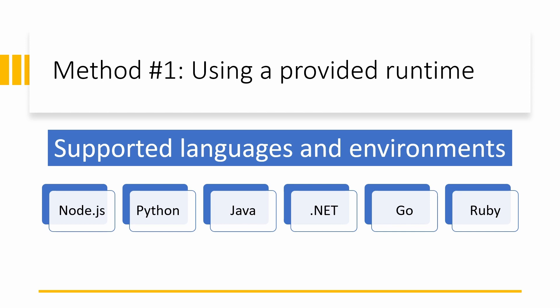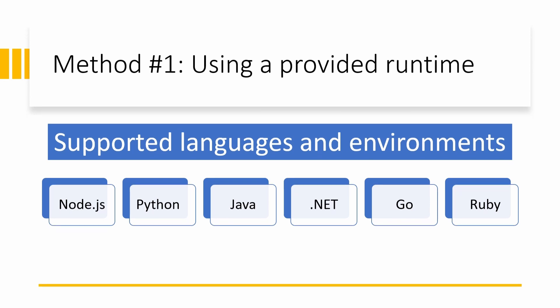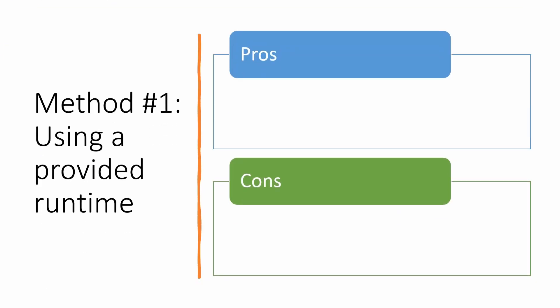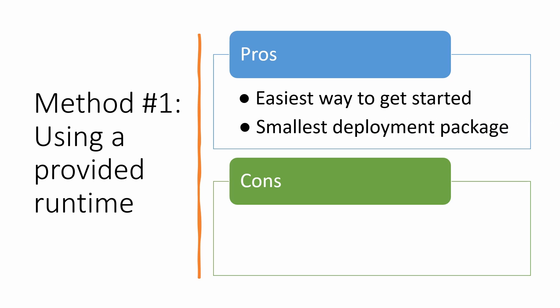Supported languages include Node.js, Python, Java, .NET, Go, and Ruby. The advantages of using provided runtimes: this is the simplest and fastest way to build and deploy Lambda functions. The function code does not need to be aware of the AWS Lambda Runtime API — it only needs to handle events and return responses. This allows developers to immediately start working on application-specific functionality without writing any infrastructure code. This method will create the smallest deployment package optimized for the AWS environment, giving you the shortest deployment and cold start times.